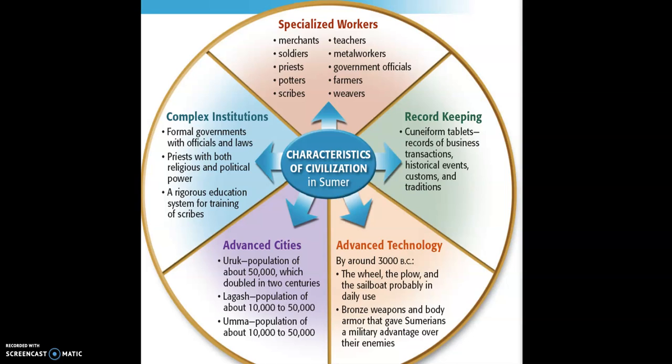These are some characteristics of civilization in Sumer, and notice the similarity to the general characteristics of civilization we spoke about earlier: specialized work, record keeping, different technologies, advanced cities, complex institutions. These features are true almost universally in places that we consider civilized.